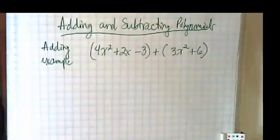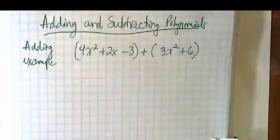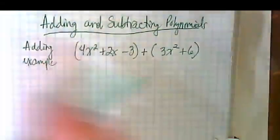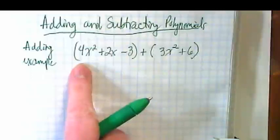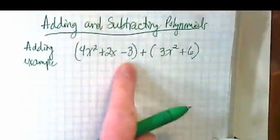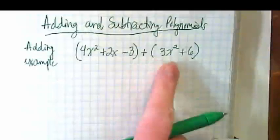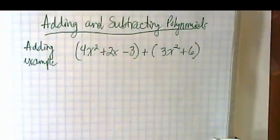Let me zoom in so you can see that better. Our example is a trinomial plus a binomial where we have 4x² + 2x - 3 and 3x² + 6.